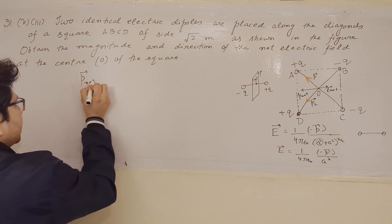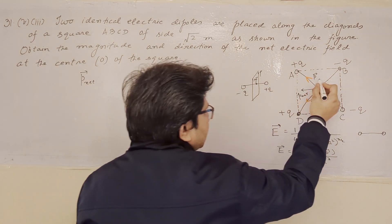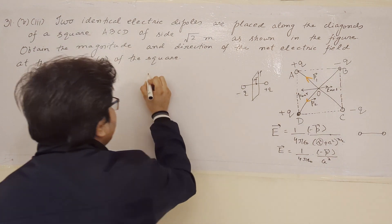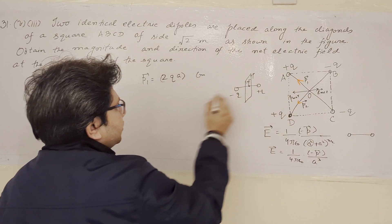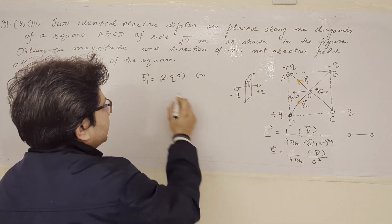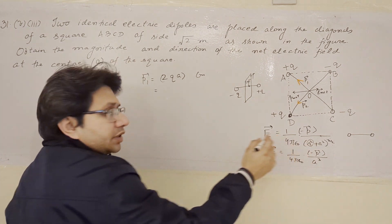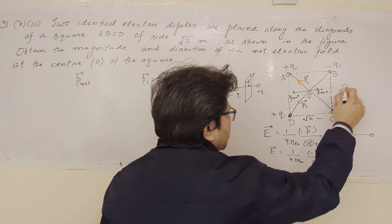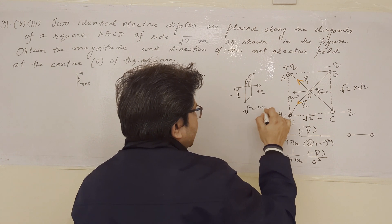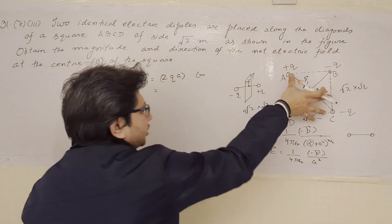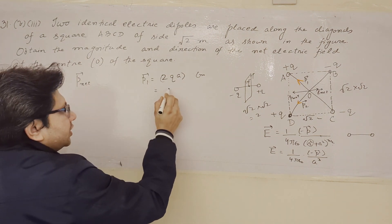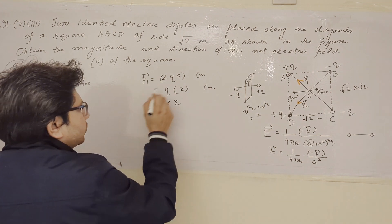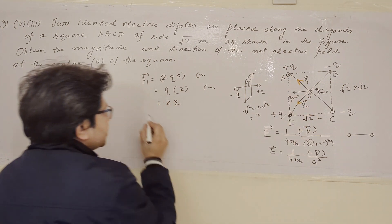Now let us calculate the net dipole moment. The dipole moment of the first dipole, P1, is given by 2qa, where 2a is the distance AC. Since the square has a side of square root 2 meters, the diagonal length is square root 2 multiplied by square root 2, which equals 2. So the dipole length is 2, and P1 equals q multiplied by 2, which gives P1 equals 2q coulomb-meter.